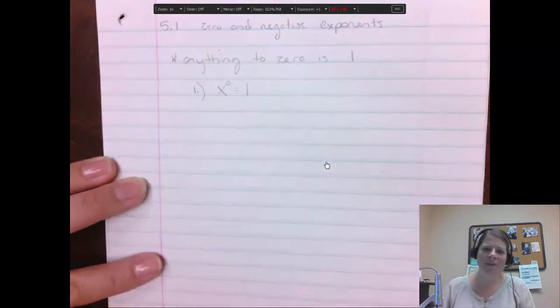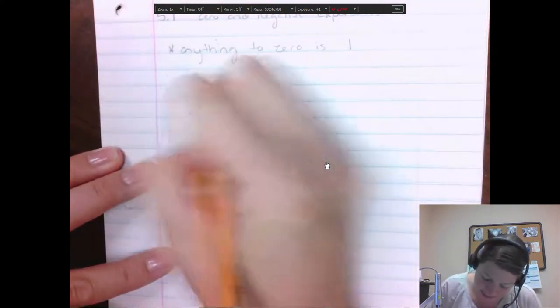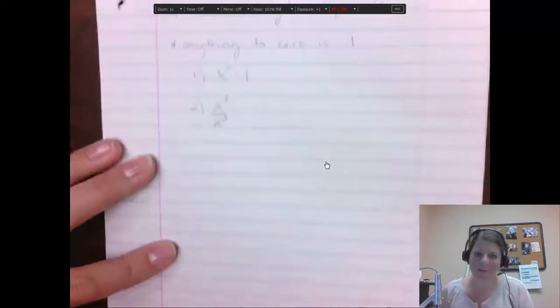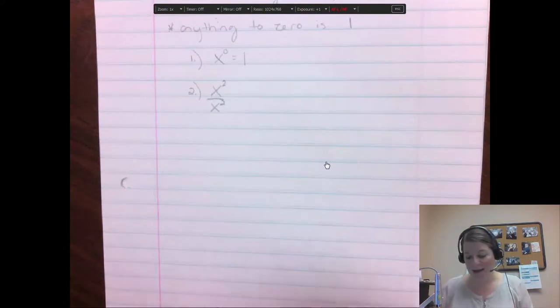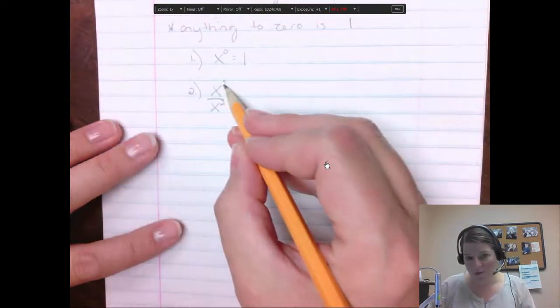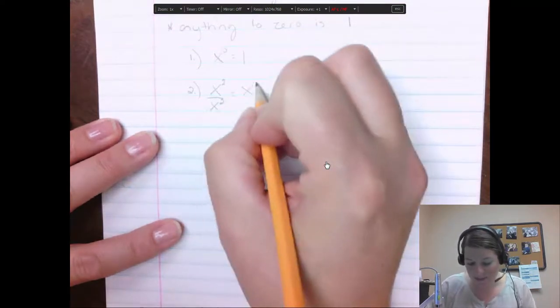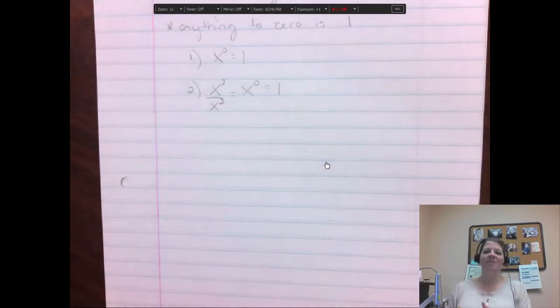So if we look at something like I was just saying, x squared over x squared. This is what I was saying where we know they divide into each other and they equal 1. So you might recognize that right away. But if you didn't, you could follow the rules of 2 minus 2 is 0. So this is x to the 0, which also equals 1. And that's where this idea of something to the 0 power equals 1 comes from, is division.